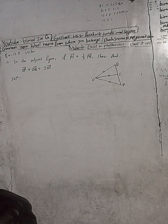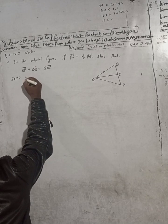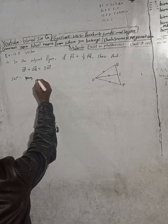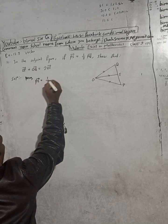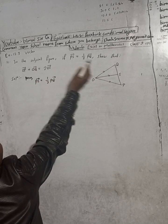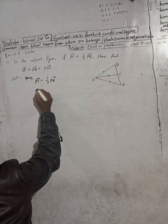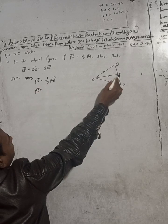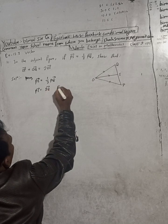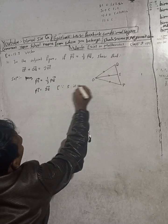So for this one, given: PS vector is equal to 1 by 2 PQ vector. Now you can write PS vector is equal to SQ vector. The reason for this is that S is the midpoint of PQ.